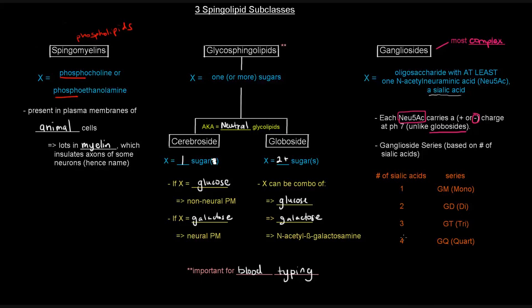If there's three of them, GT, tri, four of them, GQ, quat, or quart. Basically, they're classified for the number of sialic acids that are contained in that certain polar head group.